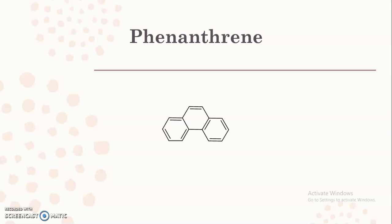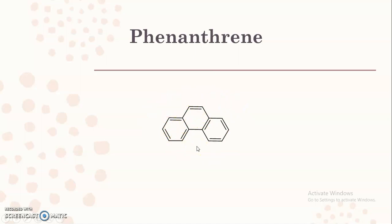Let us see what is phenanthrene. Here you can see the structure of phenanthrene. The difference between anthracene and phenanthrene is that anthracene is a fused ring system but it is linear, whereas phenanthrene is also a fused ring but it is angular, because the three benzene rings connected in it are not present linearly — they are present in an angular arrangement.